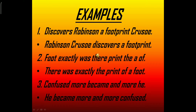Let us have a look at some examples from the chapter itself. Number one: 'discovers robinson a footprint crusoe' — the answer is 'Robinson Crusoe discovers a footprint.' Number two: 'foot exactly was there print the a off' — the answer is 'There was exactly the print of a foot.' Number three: 'confused more became and more he' — the answer is 'He became more and more confused.' Read the chapter thoroughly to solve the exercise at the end of this video.